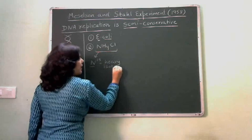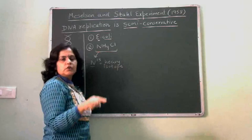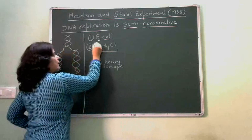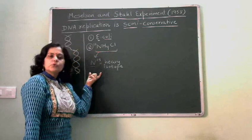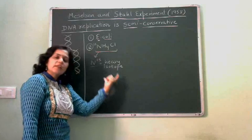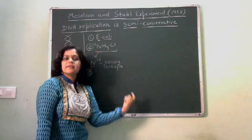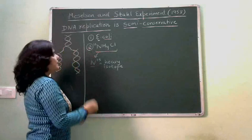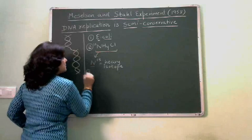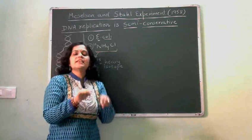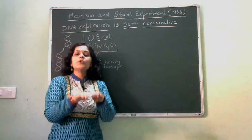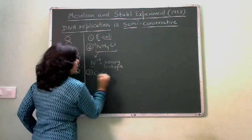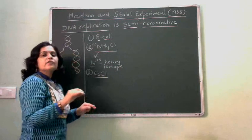This N15 is not radioactive — it is heavy. Normal nitrogen is N14. So N15 is the heavy isotope and N14 is the light, normal nitrogen. To separate heavy from normal nitrogen, density gradient centrifugation is performed. The third thing used in this experiment is density gradient centrifugation using cesium chloride.